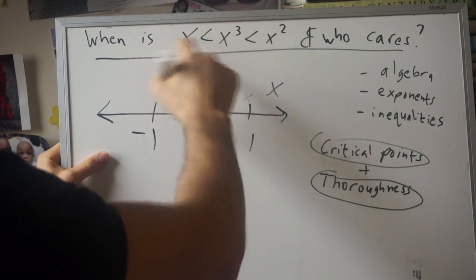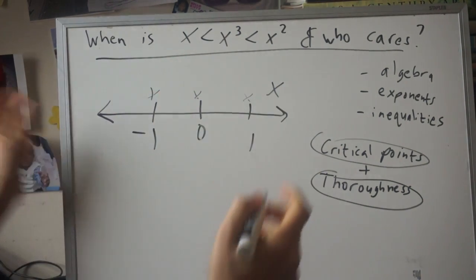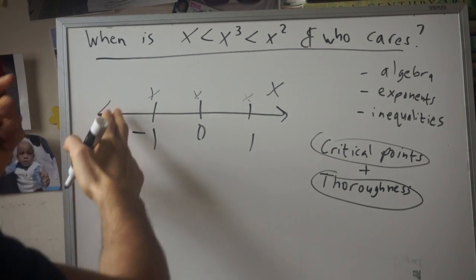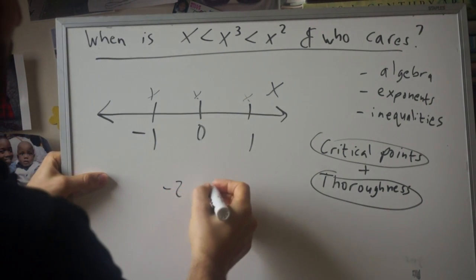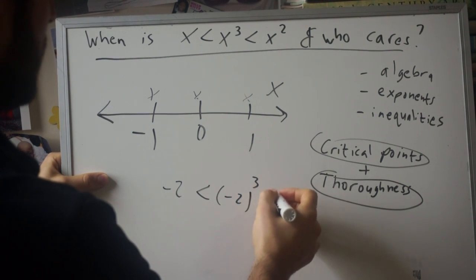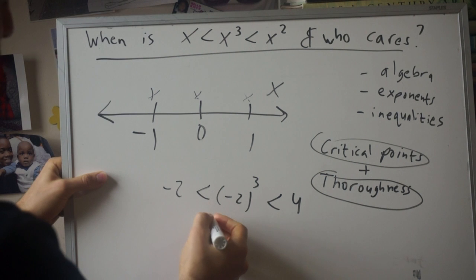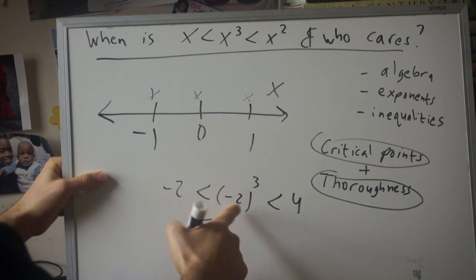Let's try this interval, so let's try negative two. Is negative two less than negative two cubed, less than four? This happens to be negative two cubed, which is negative eight.